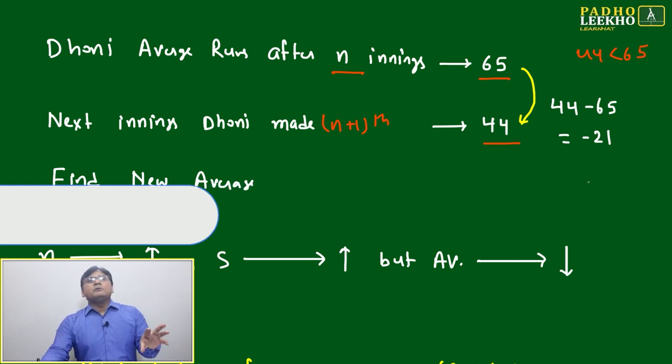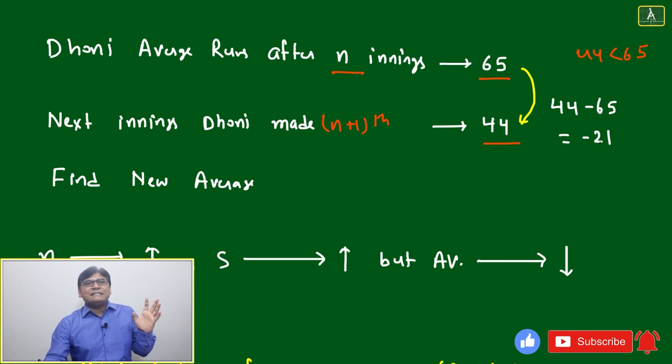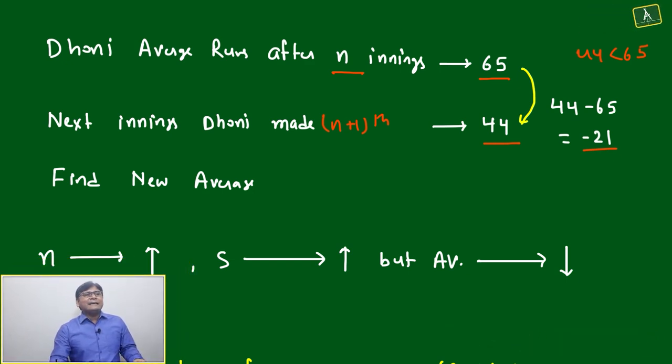44 minus 65 will become minus 21. Then we can say the new average will be 100 percent less than 65. What is happening in this second case?